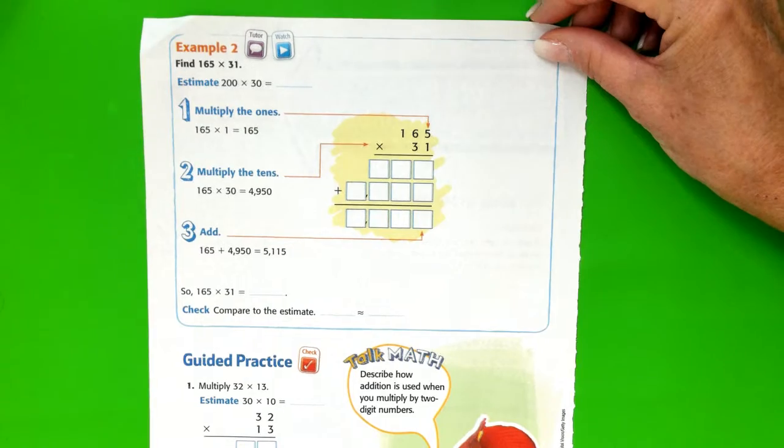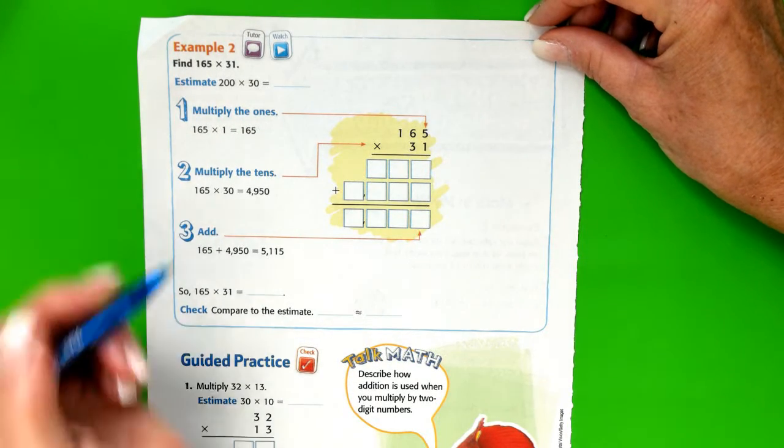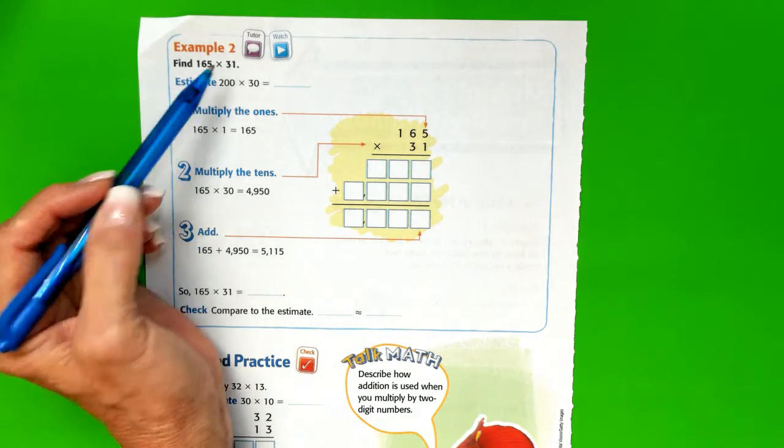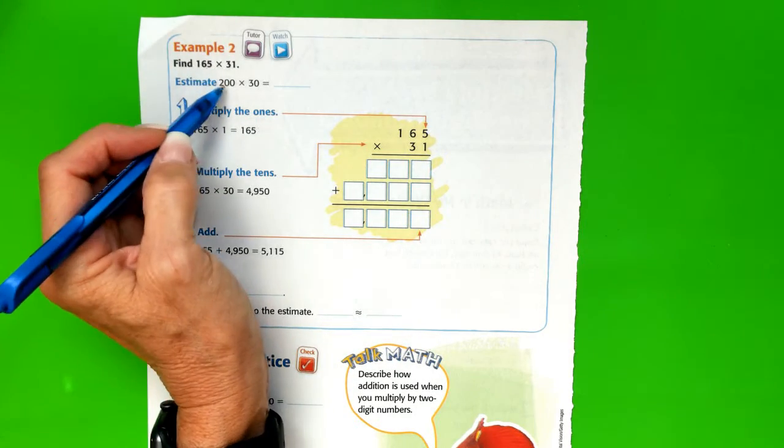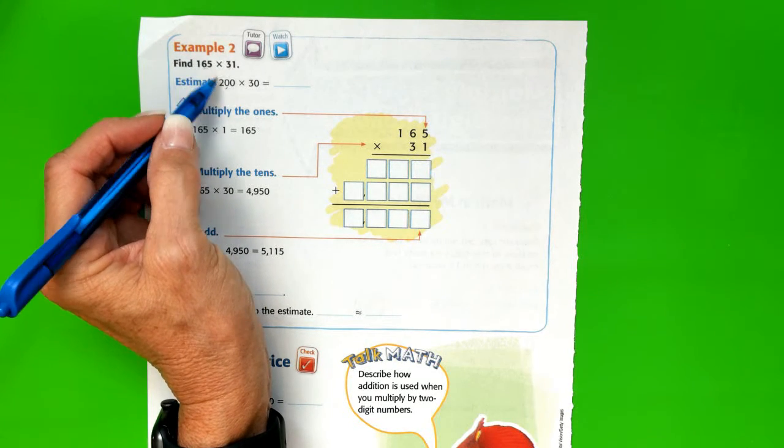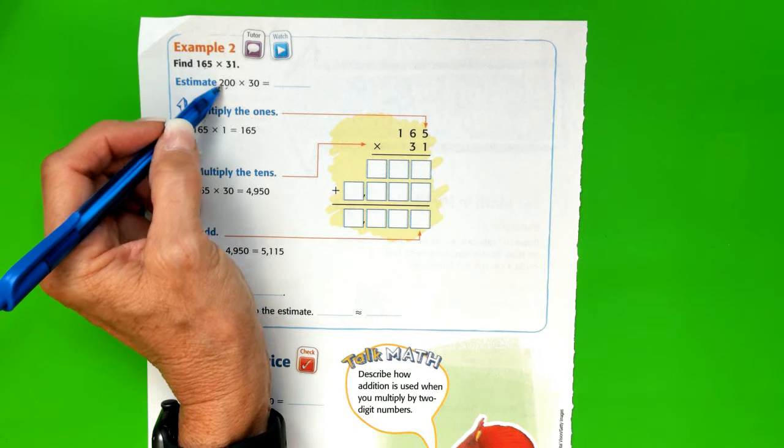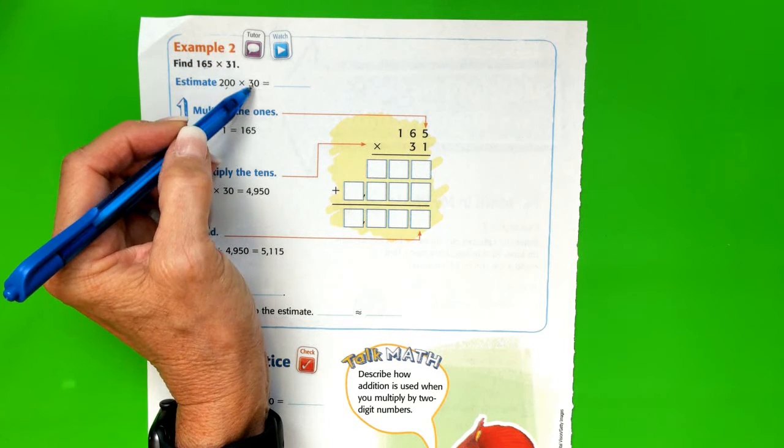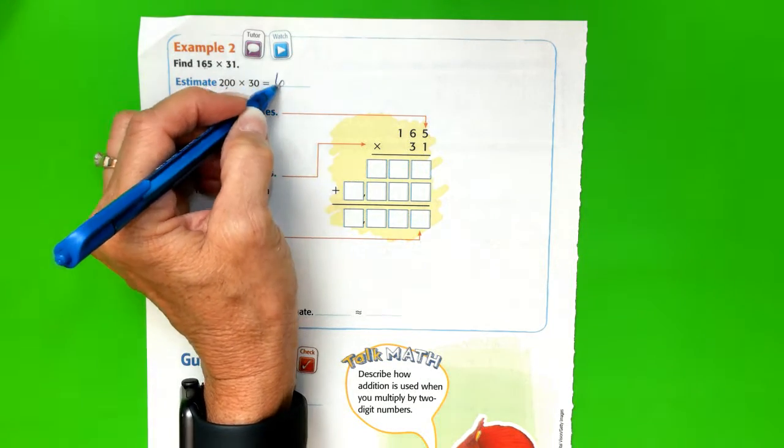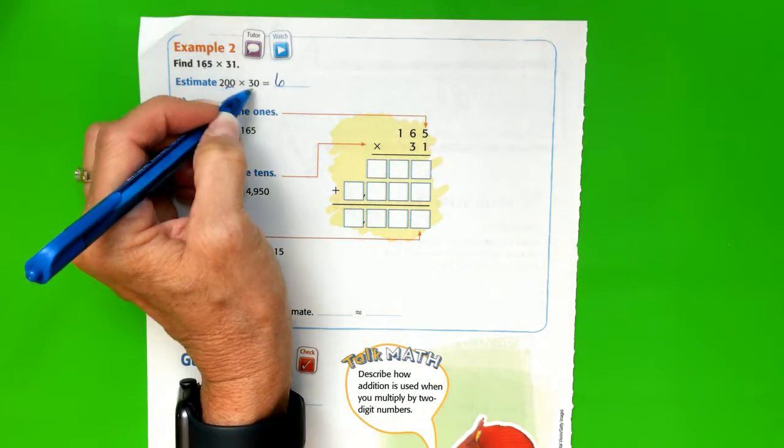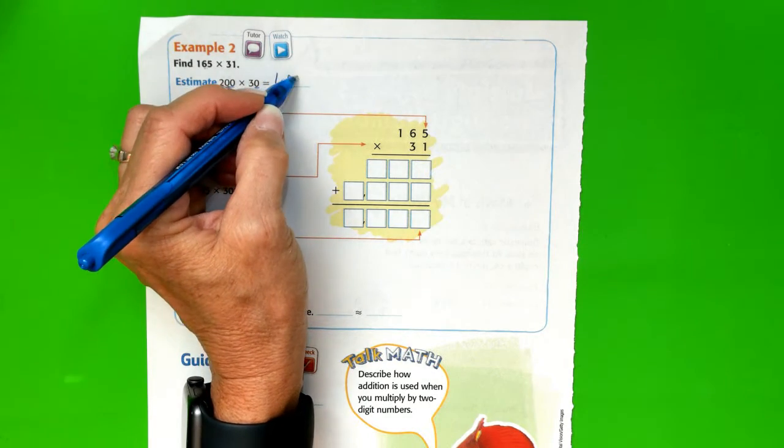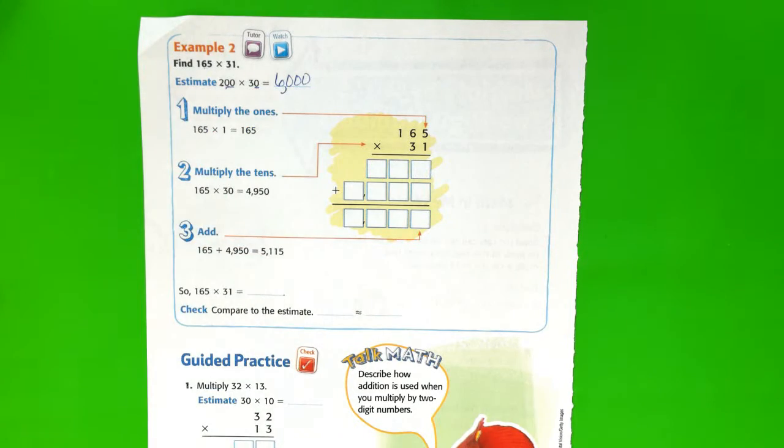Example number 2. We're going to find the product of 165 times 31. First we're going to estimate, and in this instance we've rounded both. So they took 165 and rounded up to 200, and they took 31 and rounded down to 30. So 2 times 3 is 6. We have how many zeros on our factors? We have 3—1, 2, 3—so we need 3 zeros on our product.